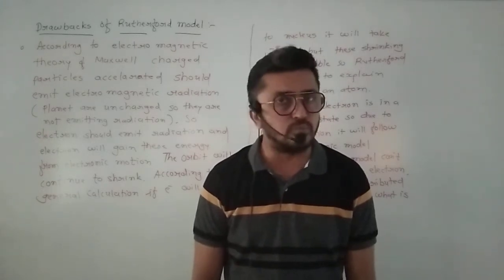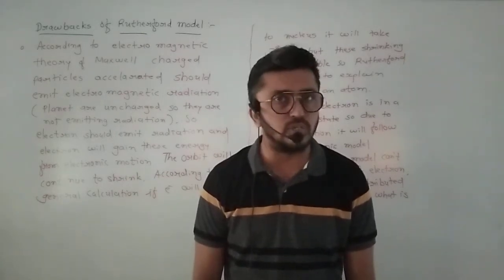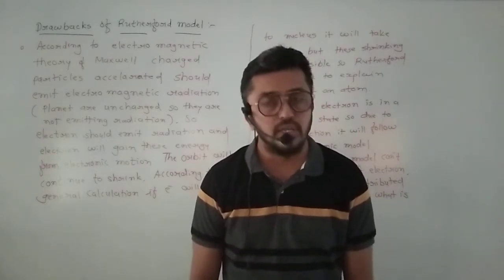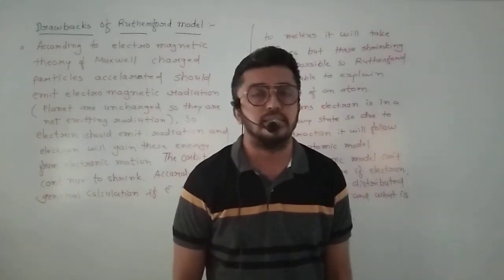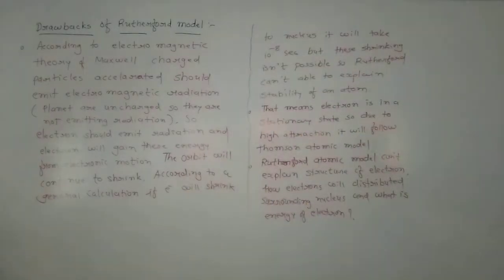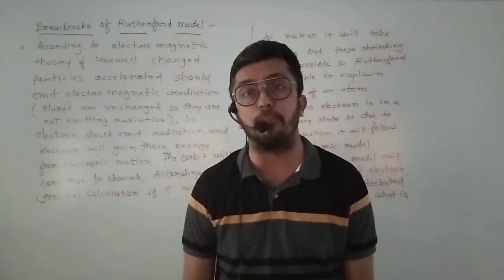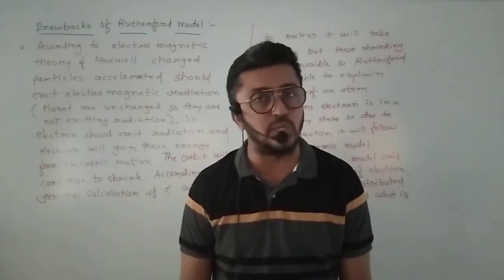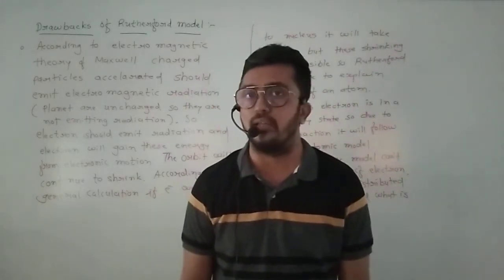From Rutherford's experiment, we explained two important conclusions. Number one: there is a small positively charged part in the atom called the nucleus. This is the first important point — that the nucleus is present in a small part, and electrons move surrounding the nucleus. The second point compares this with the solar system, where the sun acts as the nucleus and all planets move surrounding it.